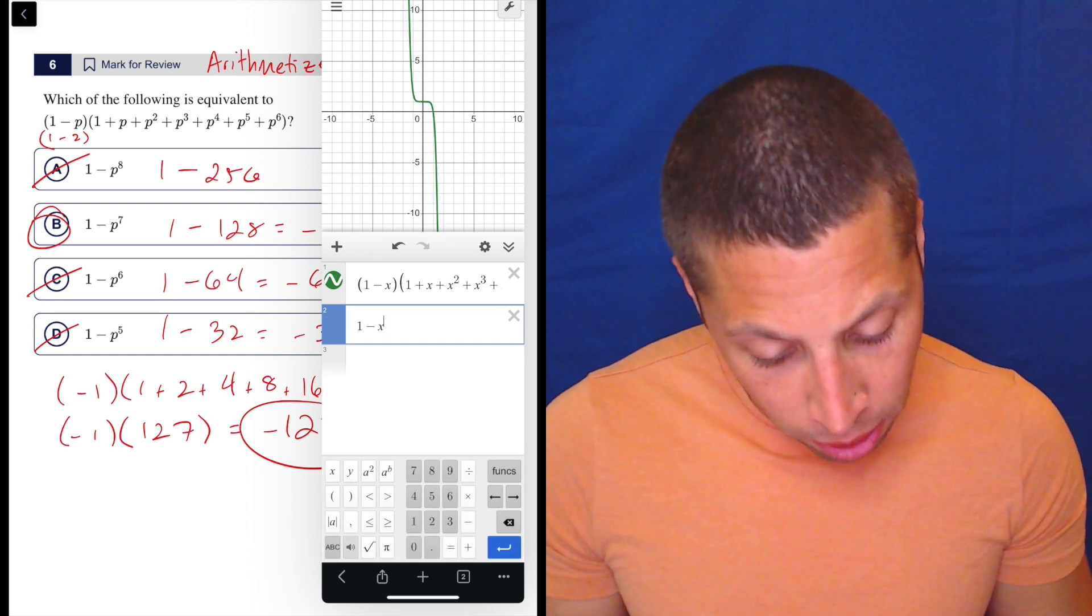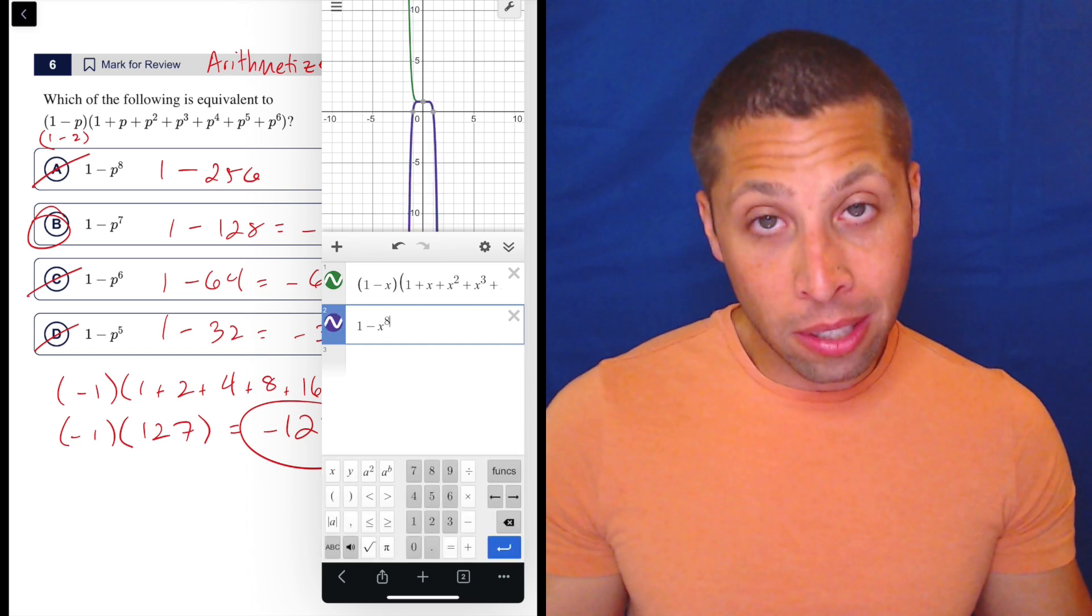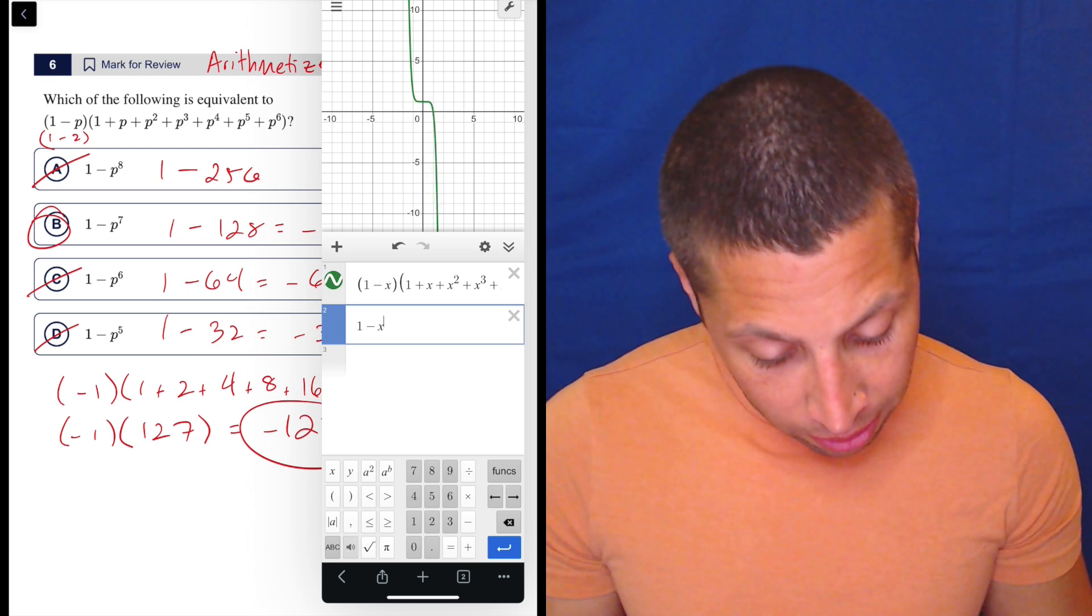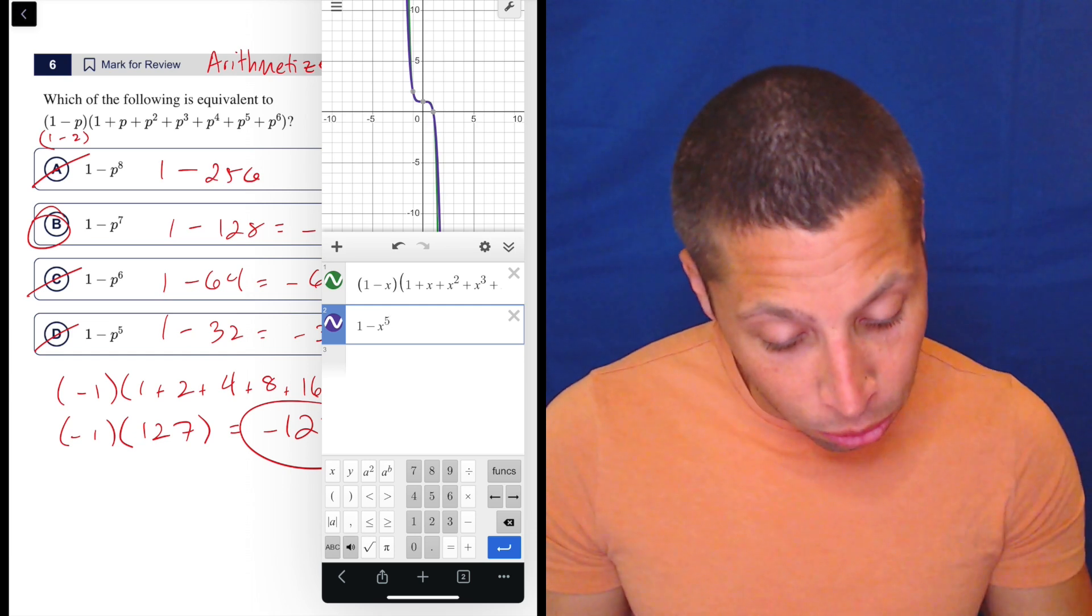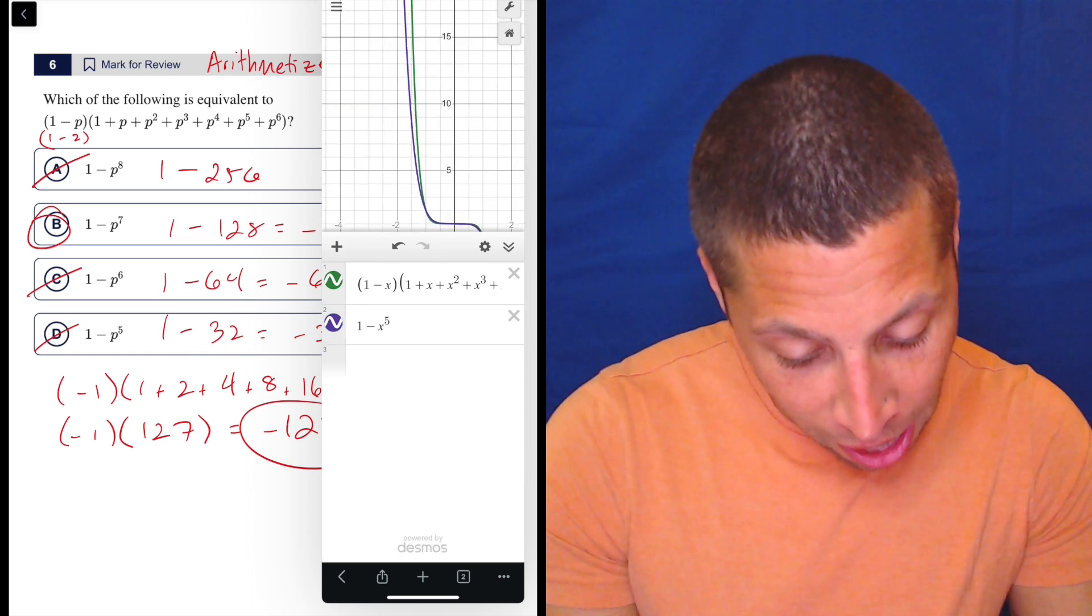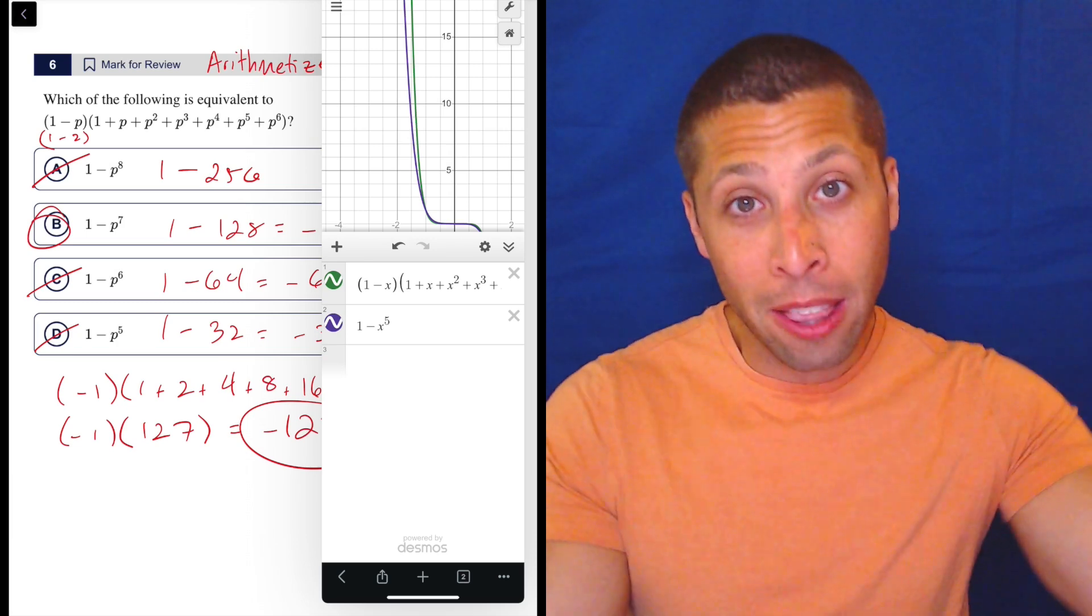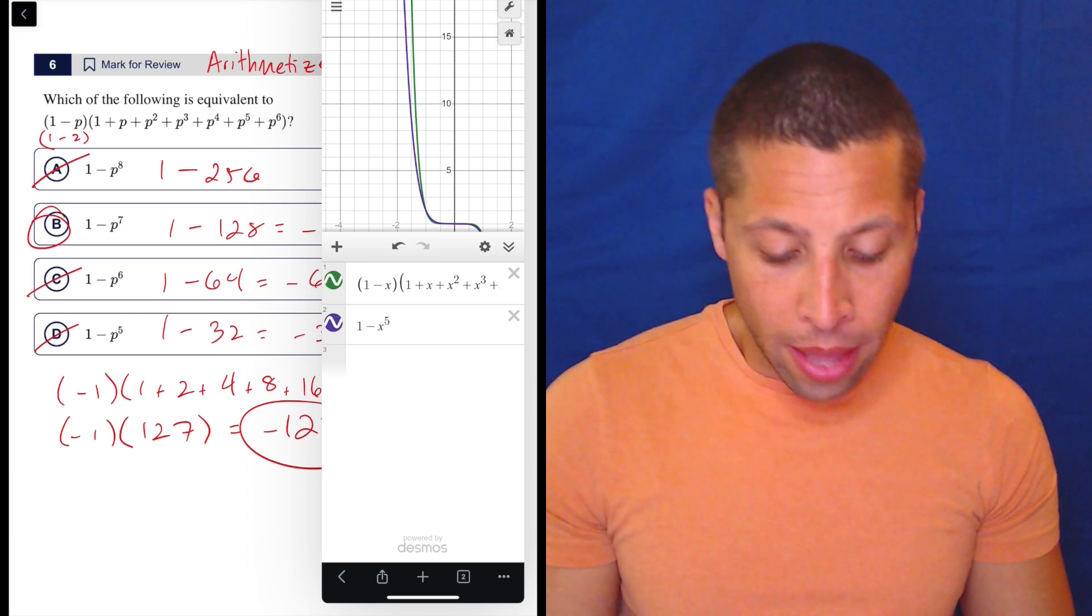Now, if we had done a wrong answer like x to the eighth, we would see that it's not right. I mean, you can tell that they're clearly going in different directions. Same thing with x to the sixth, different directions, and x to the fifth is close. But look at it. You can tell that it's not quite the same in all those places. Because exponents, the further you get away, the more they diverge.